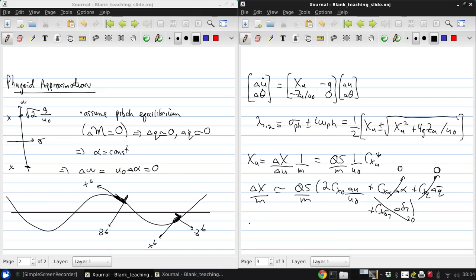So from that, if we obtain that CXU star should be U naught times 2 CX naught 1 over U naught, and then the other three terms we can drop due to the simplified fugoid assumption, what we get is CXU star is just approximately 2 CX naught.